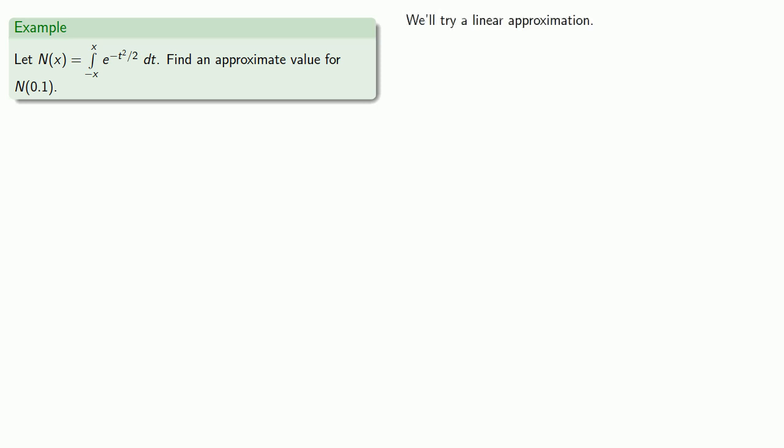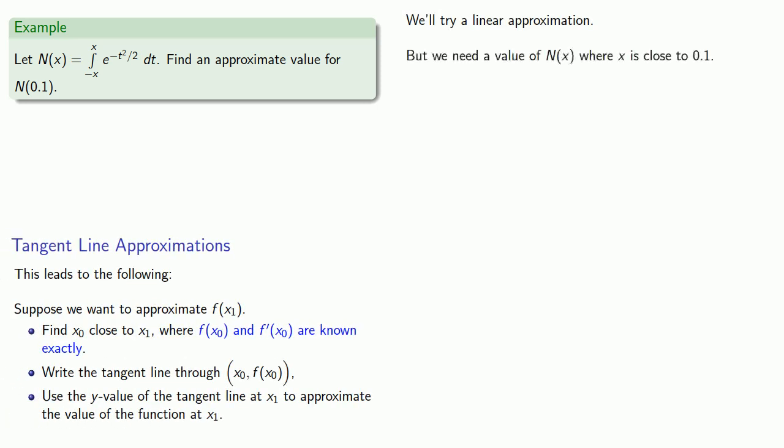We'll try a linear approximation, but we'll need a value of n of x where x is close to 0.1, where we know both the function and its derivative. Since n of x is defined by a definite integral, then we know n of 0 is 0.